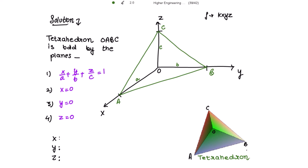For the triple integration, the limits of the innermost integral should be in two variables and the limits for the outermost integral should be constants. Choosing x first, x varies from 0 to a times (1 minus z over c minus y over b), which comes from solving the plane equation for x.